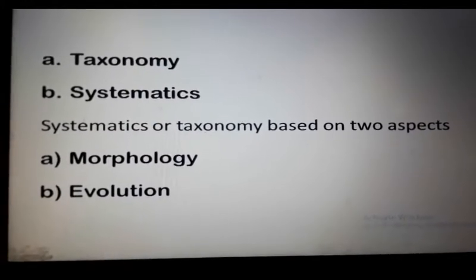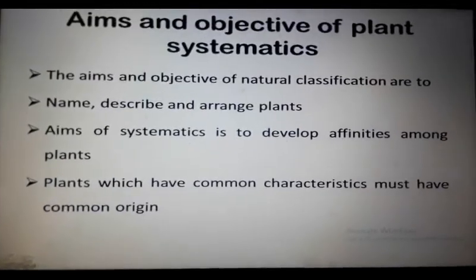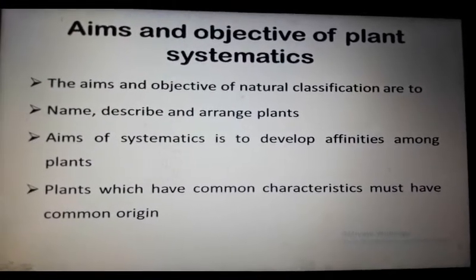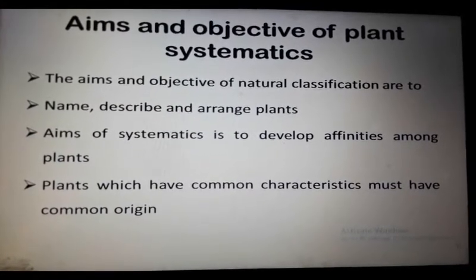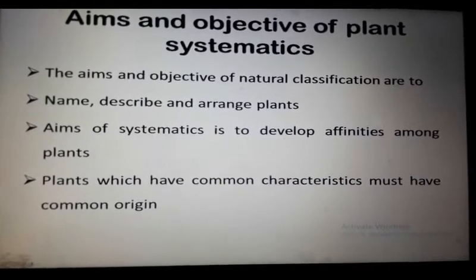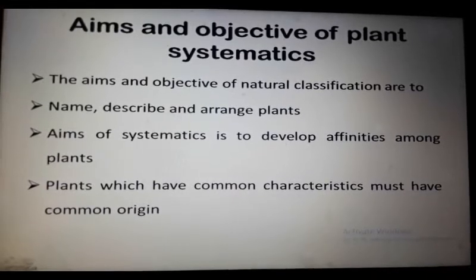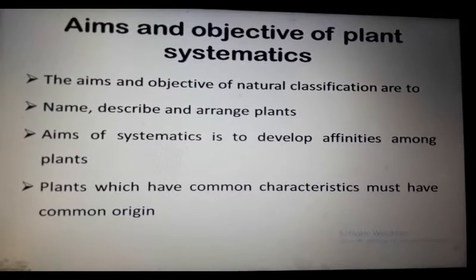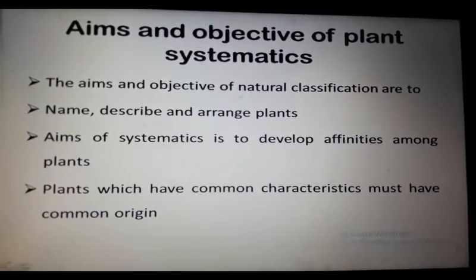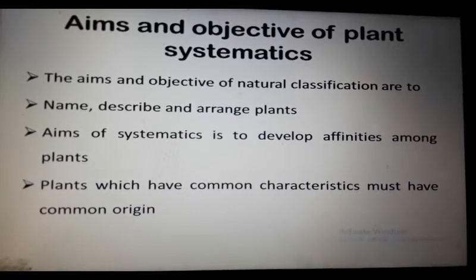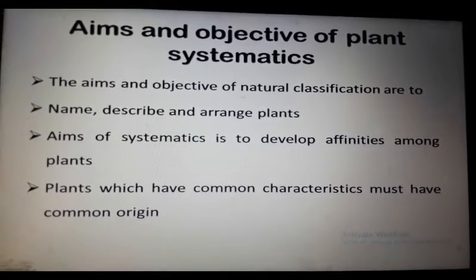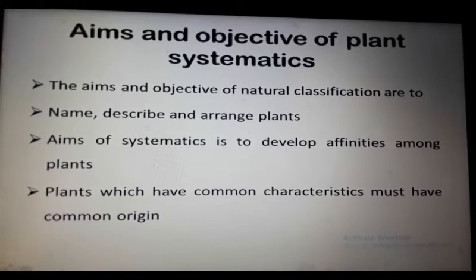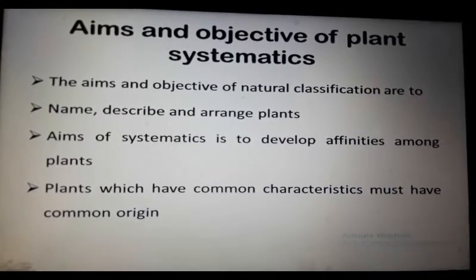The aims and objectives of plant systematics are to name, describe, and arrange plants. The aim of systematics is to develop affinities among plants — this arrangement should show the degree of relationship. The degree of relationship among plants is called affinities, and the aim of systematics is to develop these affinities.